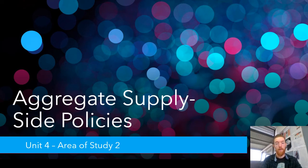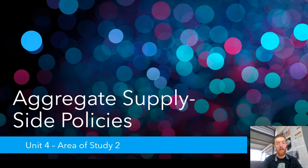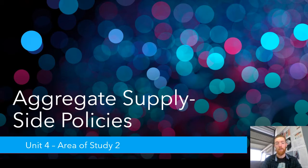Hello everyone and welcome to our third and final video in the aggregate supply side policies series, where we're going to talk about some of the ways the government uses aggregate supply side policies to try and influence our productivity, our efficiency and our productive capacity overall. Today we're going to be specifically looking at subsidies, infrastructure spending, education, training, and research and development, and how these help us achieve our domestic macroeconomic goals.